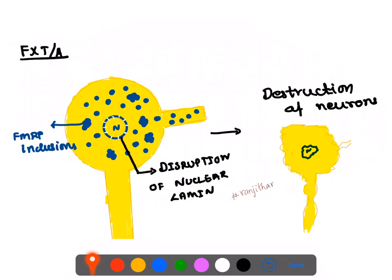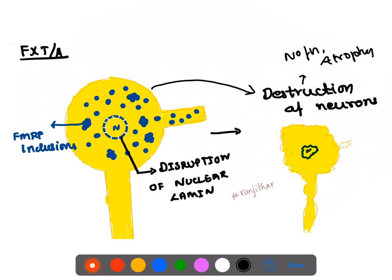When FMRP accumulates in neurons, it forms inclusion bodies. These inclusion bodies destroy the neurons and also damage the nuclear membrane — specifically the nuclear lamins. The entire neuron is destroyed as a result. This neuronal destruction leads to atrophy of the entire brain. Patients present with ataxic symptoms, brain atrophy in various regions, and neurodegenerative features similar to Parkinson's disease.